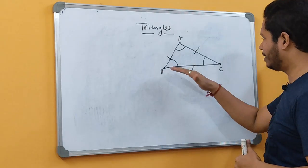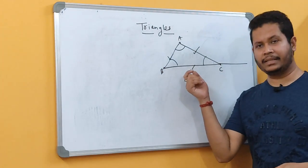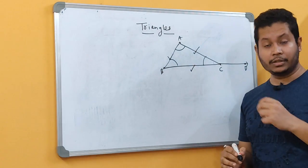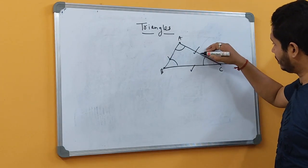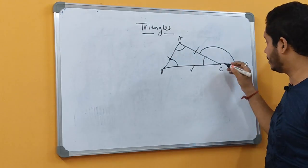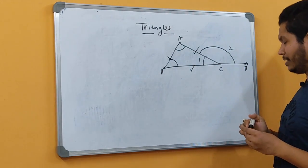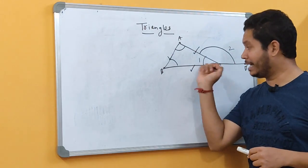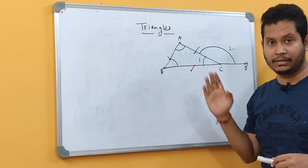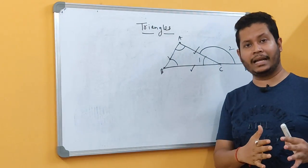Now, if there is any one side that we produce externally — for example, we have extended BC a little bit to the right side, let me name a point on this side as D — you will be able to understand that there is another angle forming on the outside of the triangle on the same line, at the same point C. Let me name the interior angle as 1 and the exterior one as 2. So angle 1, forming at point C inside the triangle, is my interior angle. But this angle formed on the same straight line but outside the triangle is called the exterior angle. This is the difference between the interior angle and the exterior angle.